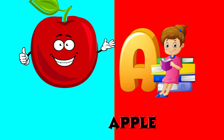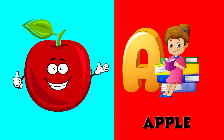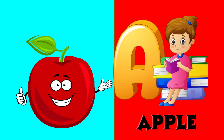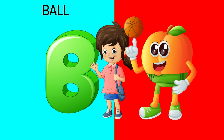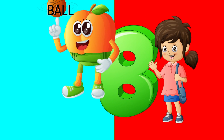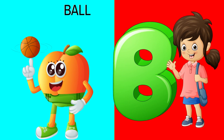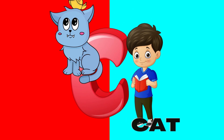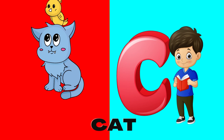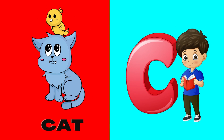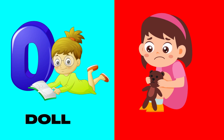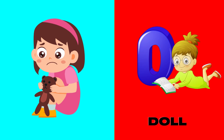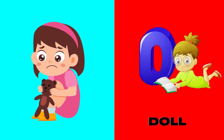A is for apple, a-a-apple. B is for ball, b-b-ball. C is for cat, c-c-cat. D is for doll, d-d-doll.